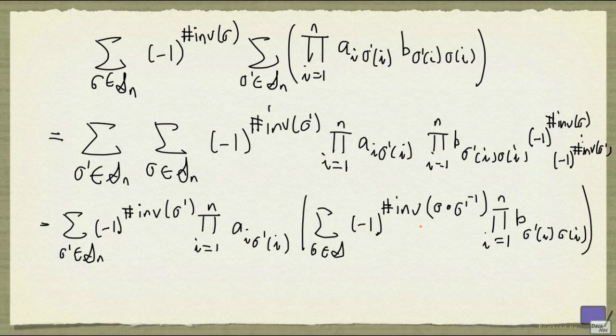And the key is that, if you look at the parity of the number of inversions of sigma and the parity of the number of inversions of sigma prime, it's the same as the parity of the number of inversions of sigma plus the number of inversions of sigma prime inverse. And that quantity turns out to have the same parity as the number of inversions of sigma composed with sigma prime inverse. So that's something that I'm going to skip.